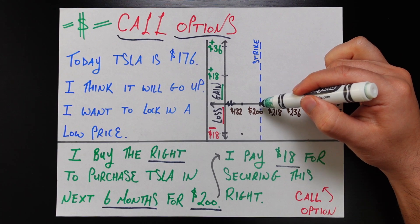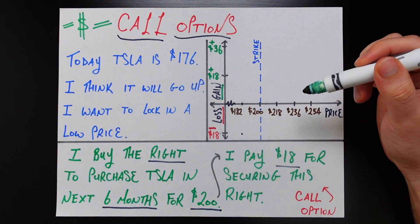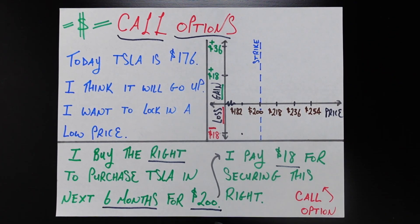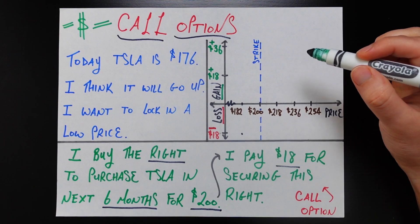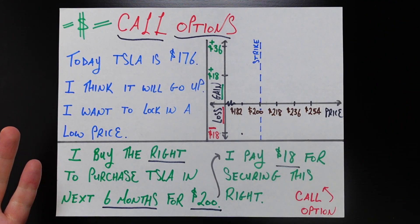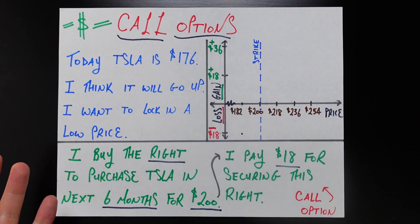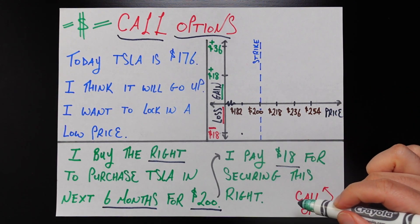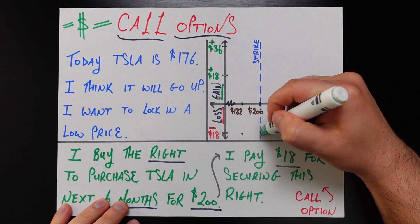Now let's say the price of Tesla stock is at exactly $200, the strike price. You might think you broke even since the fair market price equals your locked-in price. But again, you can choose to exercise the option or not — it doesn't really matter — because the fair market value is the same as the price you locked in. However, you've paid $18 to secure that option in the first place, and that is a cost that's just gone. So in this case, you have lost $18.